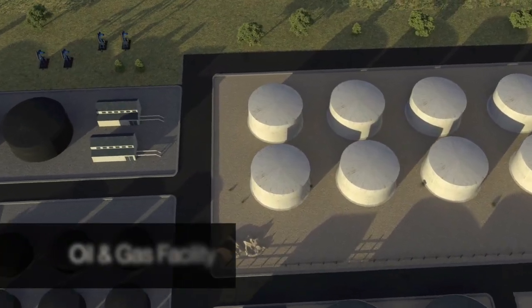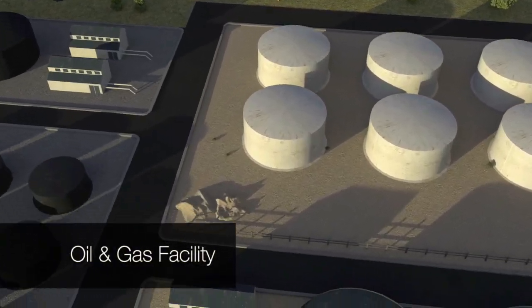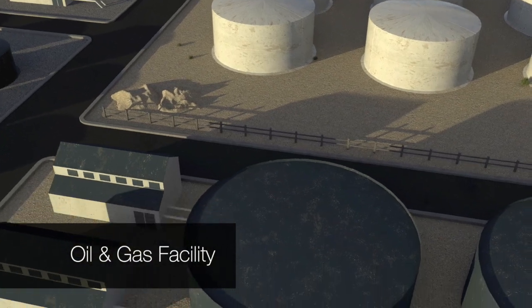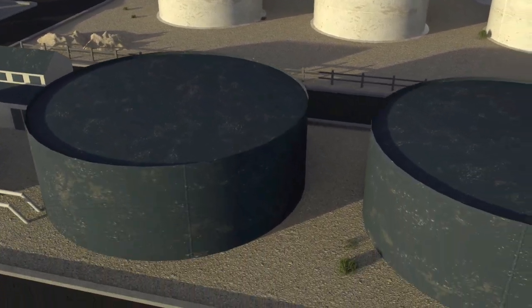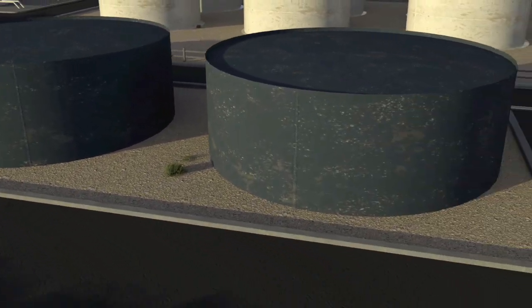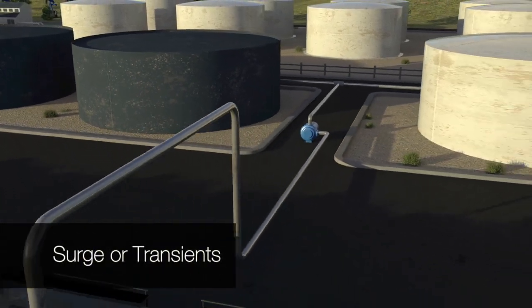In an oil and gas facility, fluid systems are subjected to many changes in flow and pressure. Such changes initiate varying degrees of pressure waves, also known as surge or transients.